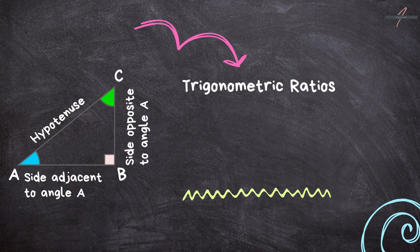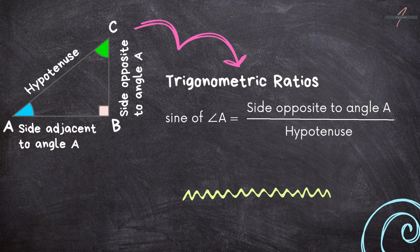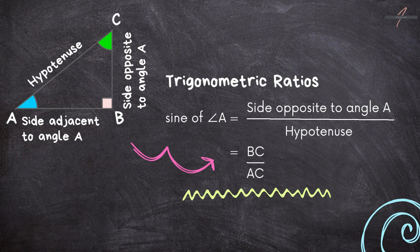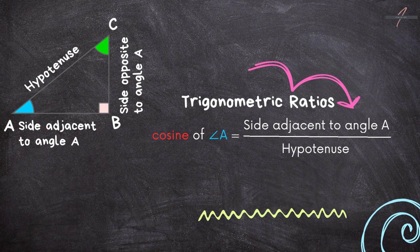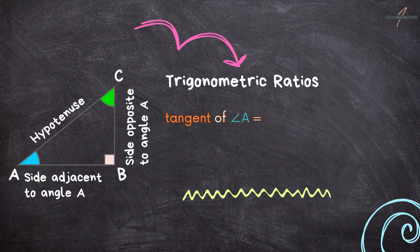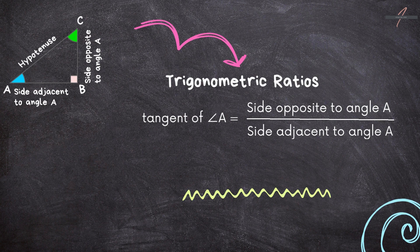Now let's try to understand the trigonometric ratios of angle A in right triangle ABC. First is sine of angle A, and it is equal to the side opposite to angle A divided by the hypotenuse, which is BC upon AC. The second ratio is cosine of angle A, which is equal to the side adjacent to angle A divided by the hypotenuse, which is AB upon AC. The tangent of angle A is the side opposite to angle A divided by the side adjacent to angle A.